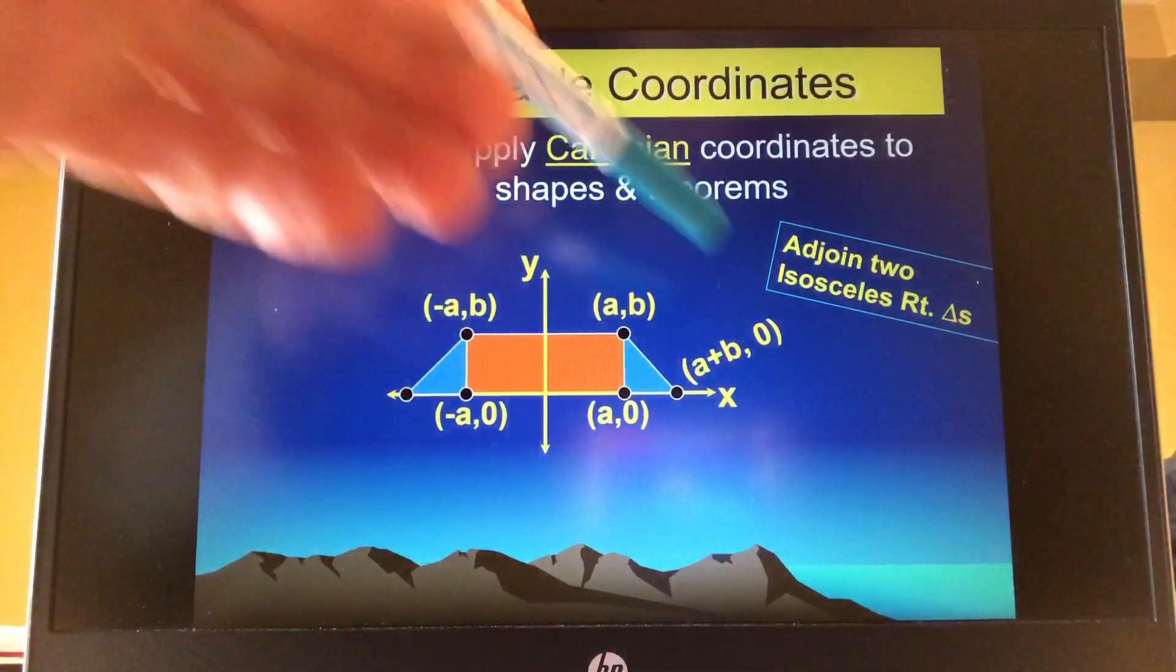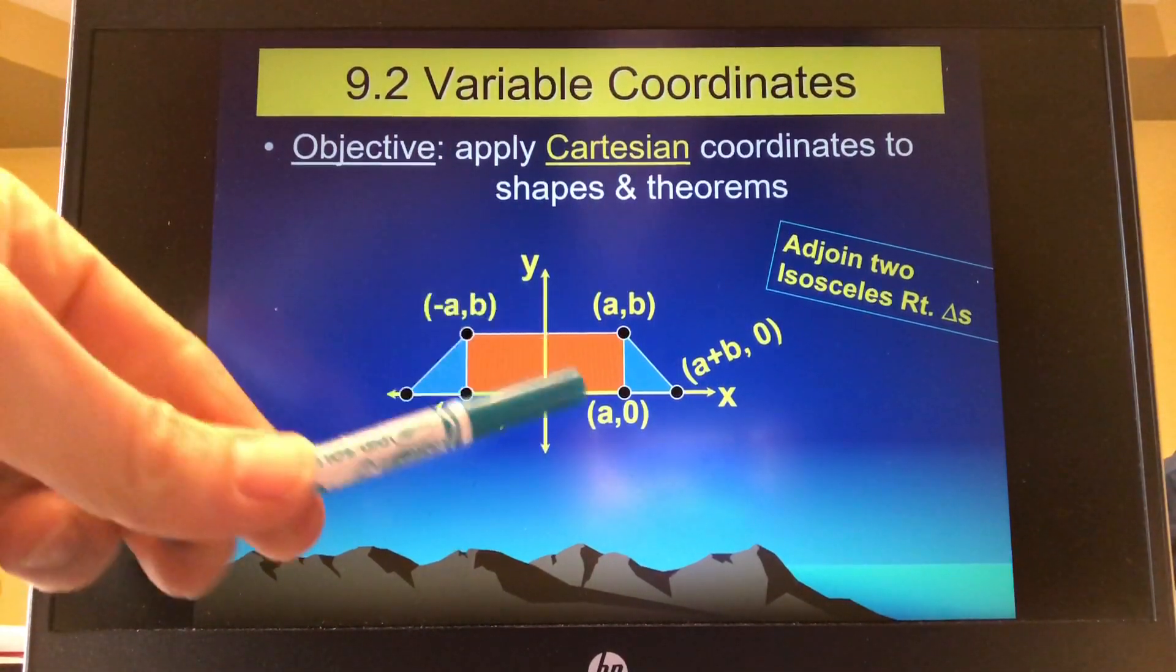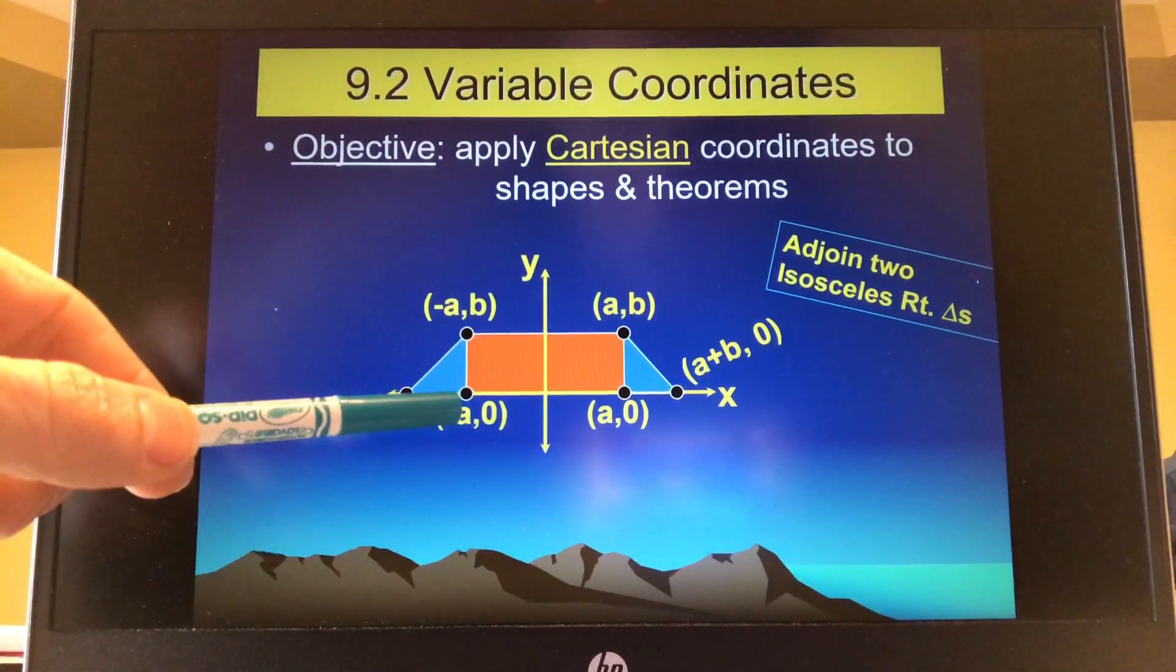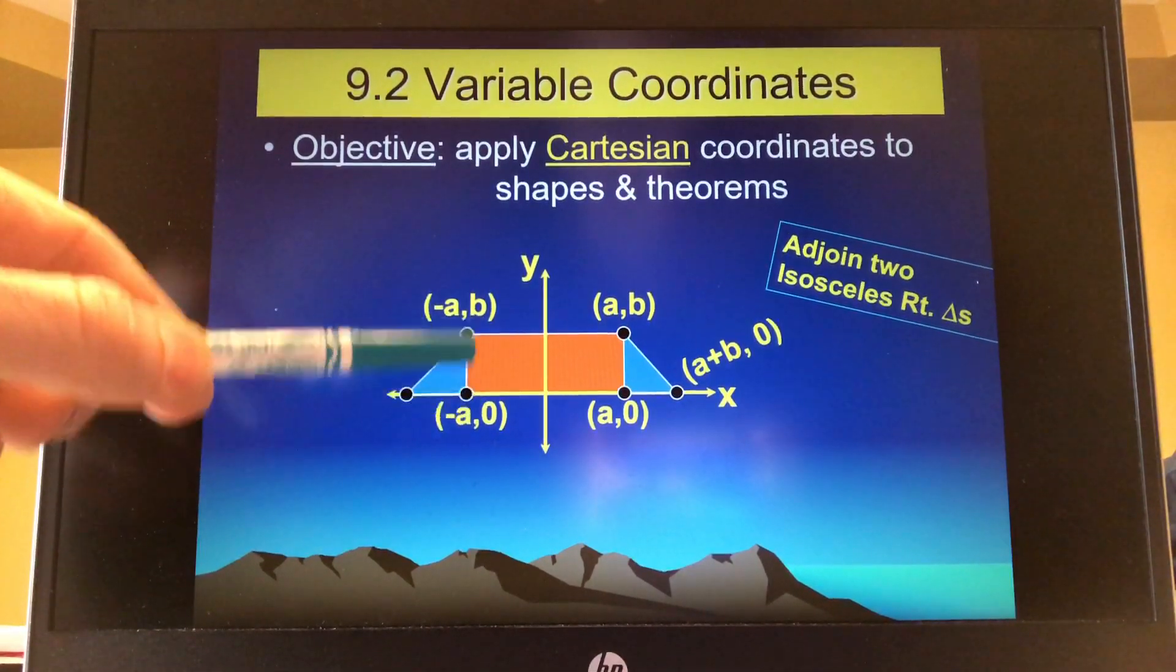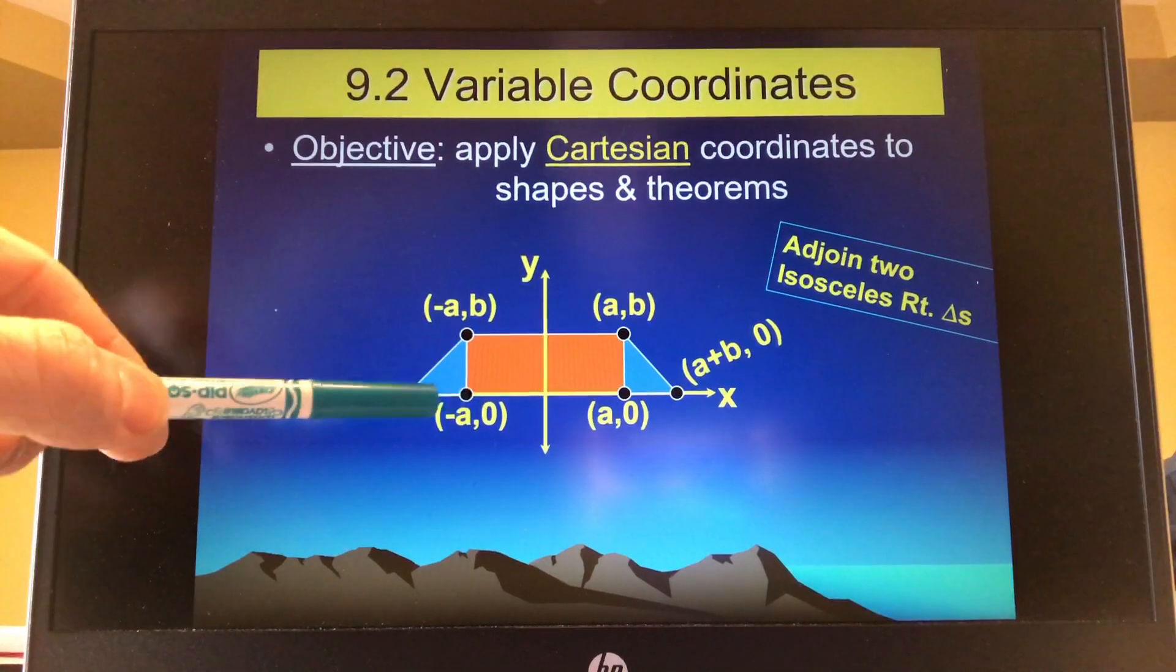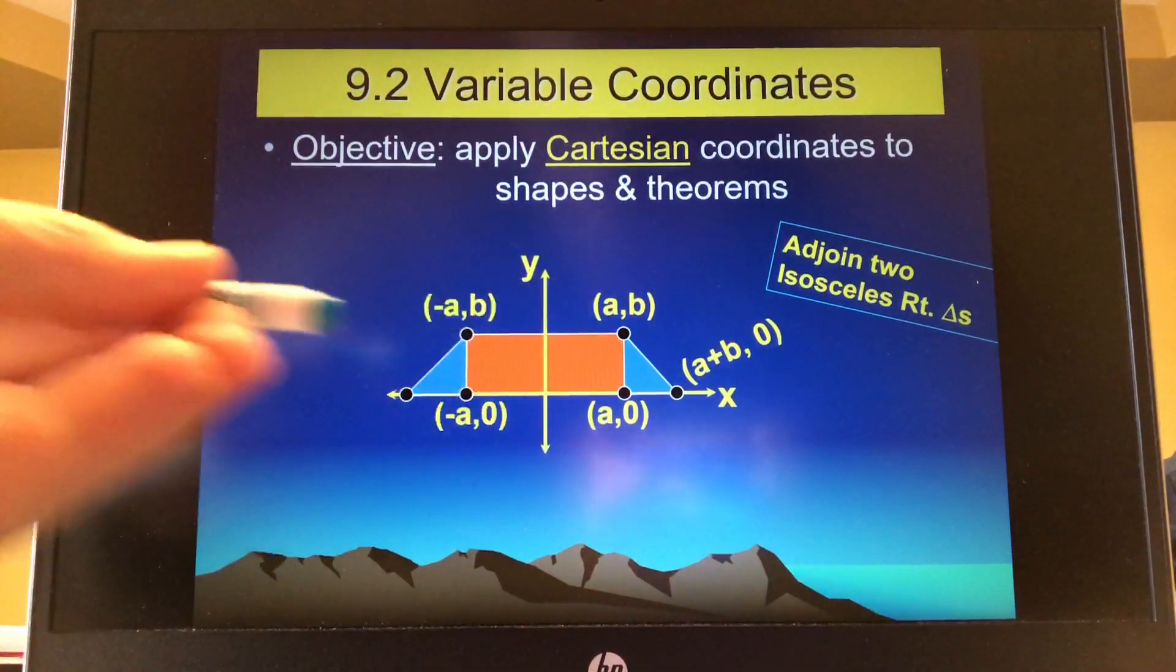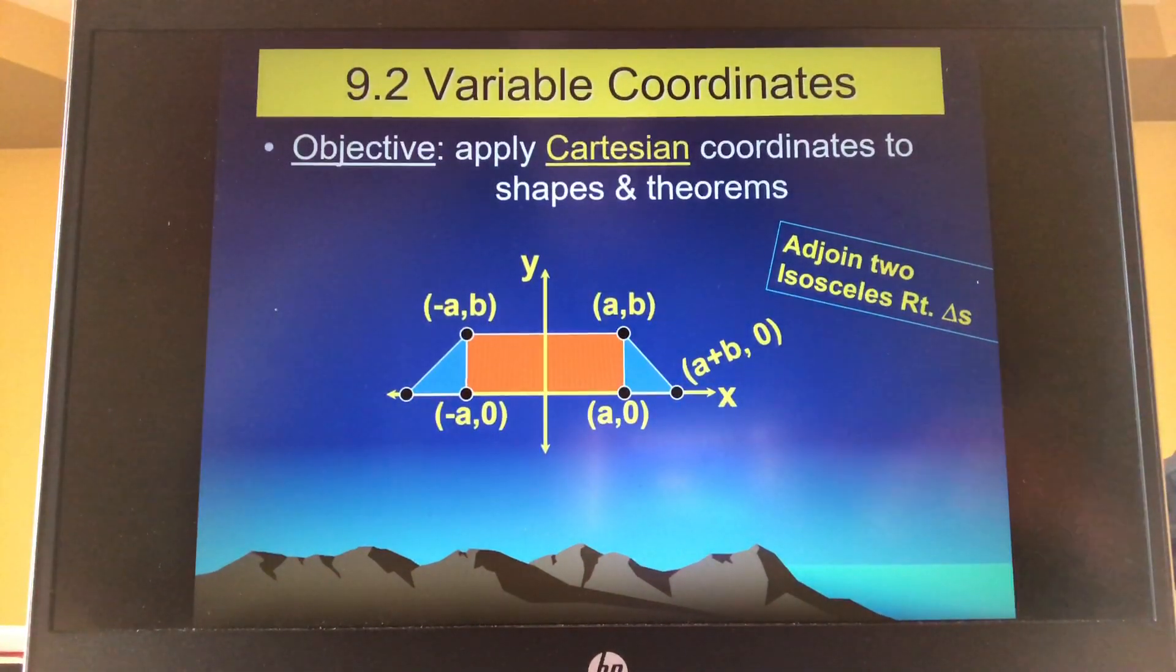And then kind of repeat that thinking over here. This distance, if I want to think of distance being negative for a minute, is negative a. If this isosceles triangle has a height of b, it also has a width of b. So I'd have to go negative in the negative direction, negative b units, which would make this negative a minus b, comma zero. Hopefully those make sense. That's sort of the big idea—use variables to get another set of coordinates.